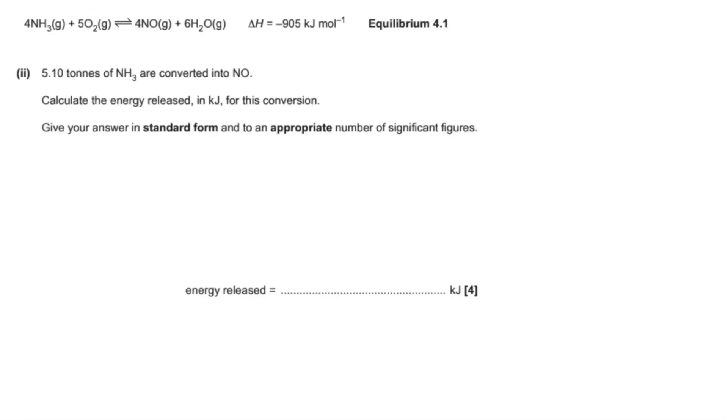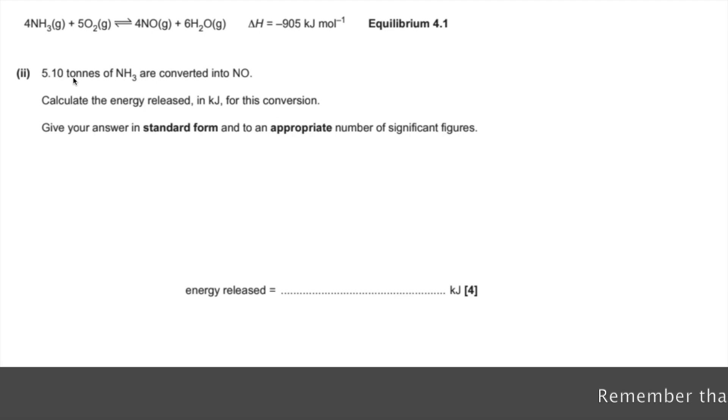The next bit of part A, we've got to do an energy calculation. We've got to give our answer in standard form and an appropriate number of significant figures. We're told that 5.10 tonnes of ammonia are converted into NO. Calculate the energy released in kilojoules for this conversion.